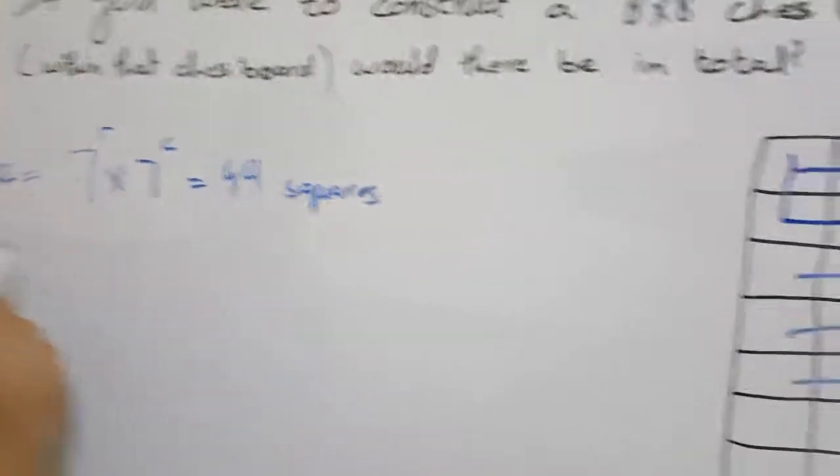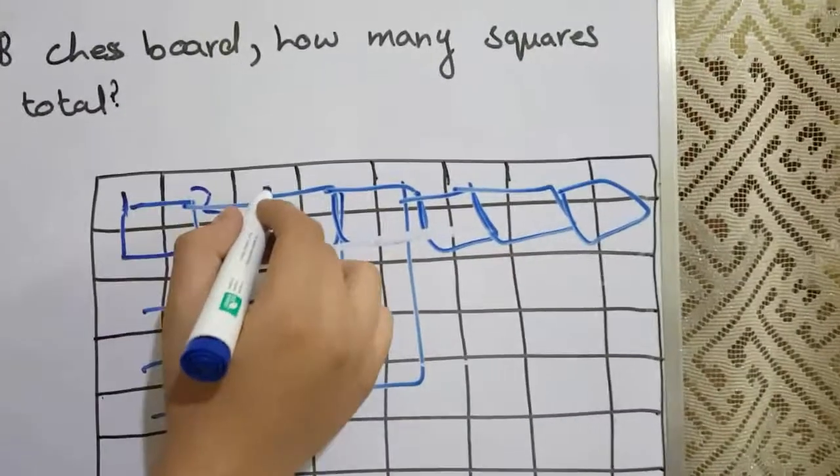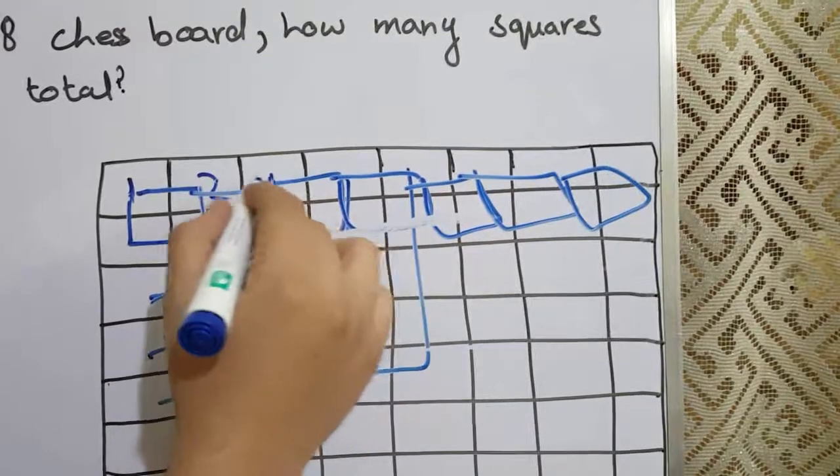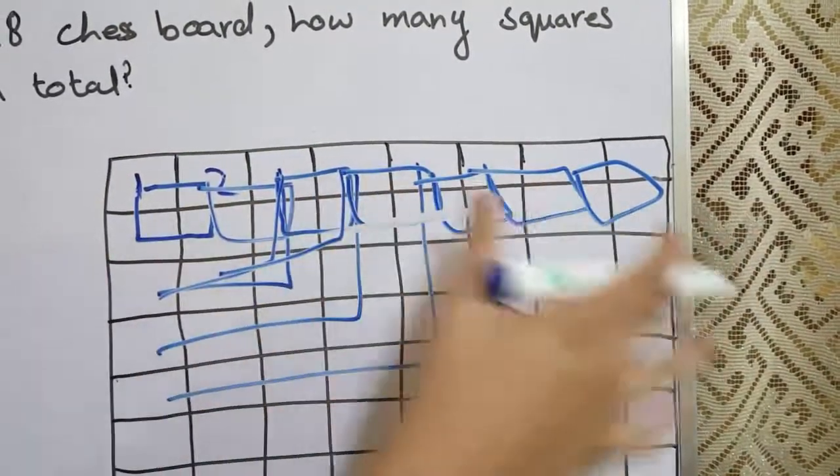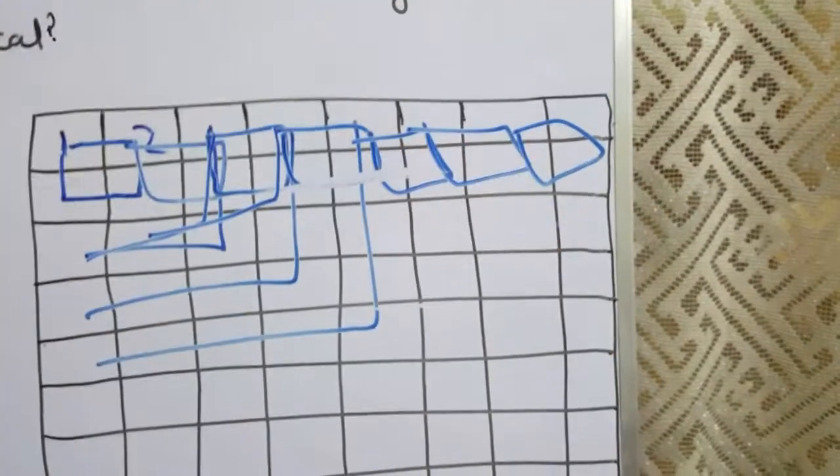Just like that, if you go 3x3 dimension, as you can see that it's 1. Then, if you go like this, it's 2. Just like this, if you go, there will be 6 in the row and 6 in the column.